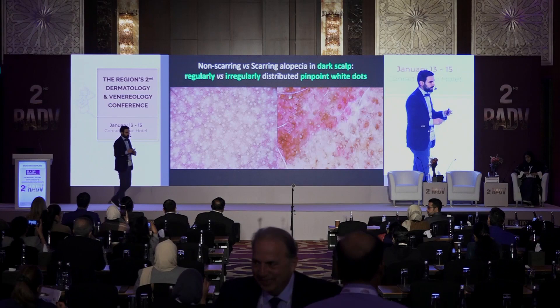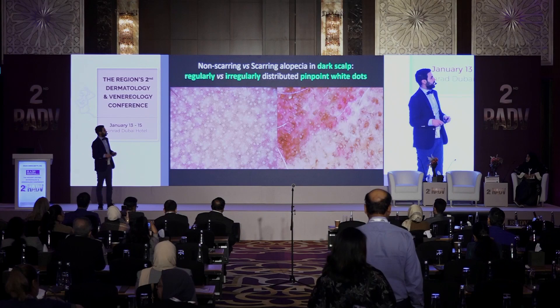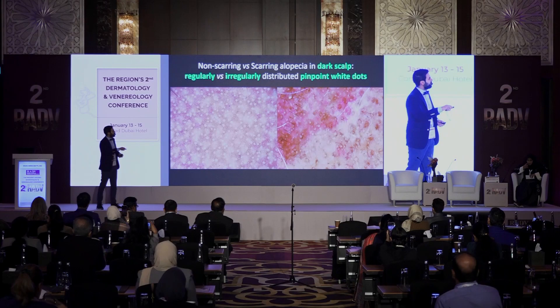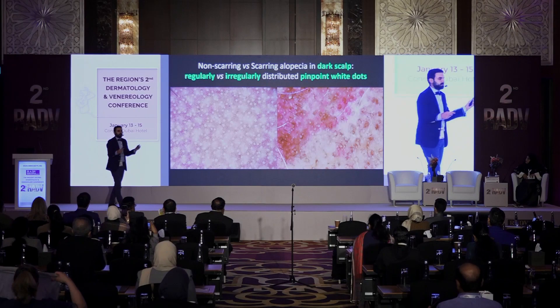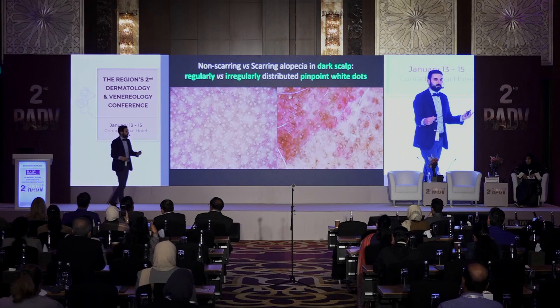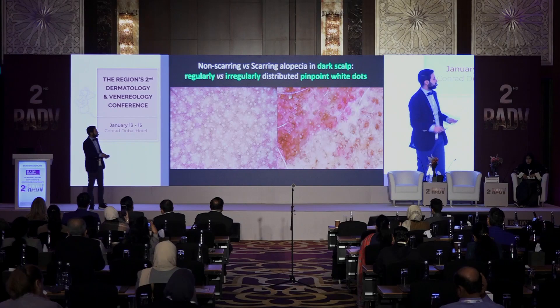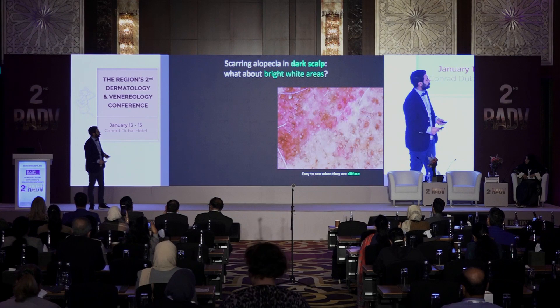What about dark skin? In dark scalp there is a big difference. We have these pinpoint white dots corresponding to eccrine gland openings — these are not visible in Caucasians. We can use the presence of these pinpoint white spots to say if an alopecia is scarring or not. In non-scarring alopecia these eccrine gland openings are regularly distributed, whereas in scarring alopecia they are interrupted by bright white areas — by the fibrosis — so they are irregularly distributed.